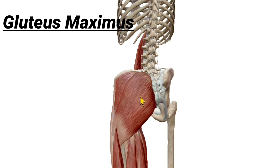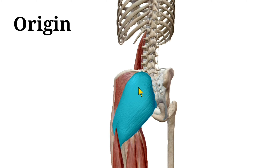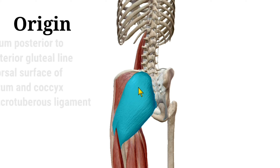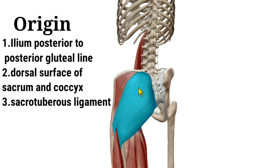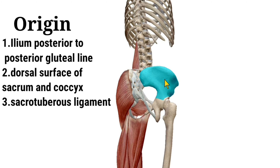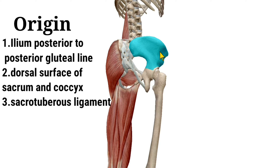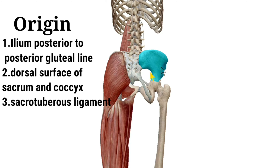About the origin of the gluteus maximus muscle: the origin is from the ileum, posterior to the posterior gluteal line. Here is the posterior gluteal line, so the origin is from the ileum posterior to the posterior gluteal line. Another origin is from the sacrotuberous ligament — sacrum to tuberous is the sacrotuberous ligament.